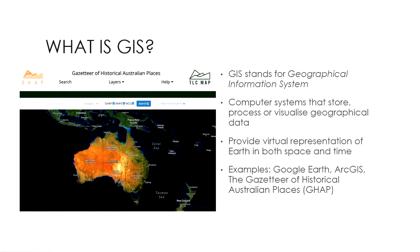So what is GIS? GIS stands for Geographical Information System, and it's any computer system that allows you to store, process, visualize, or otherwise perform operations on geospatial data. These systems essentially provide virtual representations of Earth in space — and often also in time. Examples include Google Earth, ArcGIS, and of course GHAP, which I've used as the example picture here.